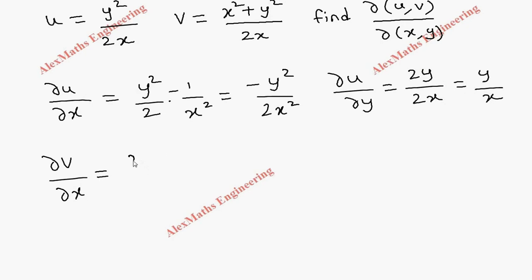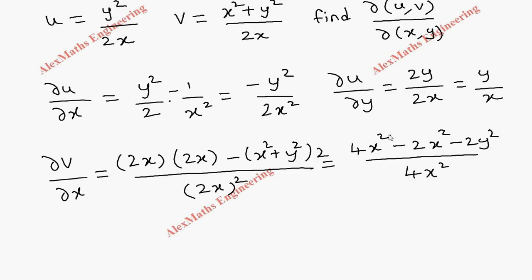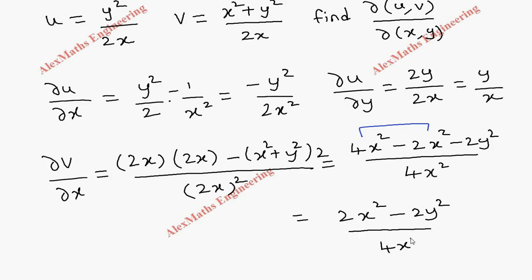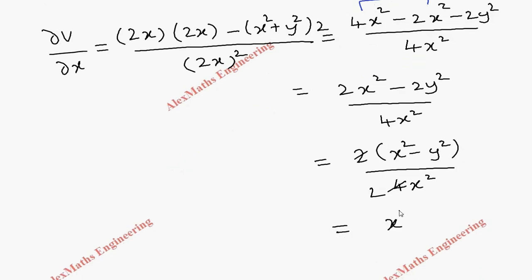Using the quotient rule: write the denominator first as it is, then the differentiation of the numerator — since y is constant, the derivative of x² + y² with respect to x is 2x — minus the numerator as it is times the derivative of the denominator (which is 2), all divided by (2x)². Simplifying: the first term is 4x², minus 2x² minus 2y², all over 4x². Combining like terms gives 2x² minus 2y² over 4x². Taking 2 as a common factor and canceling, we get (x² − y²) / 2x².